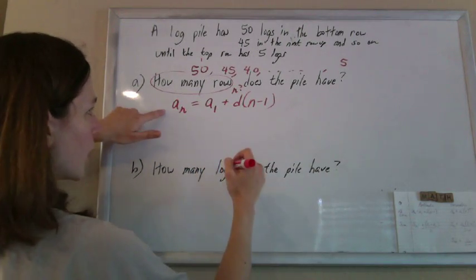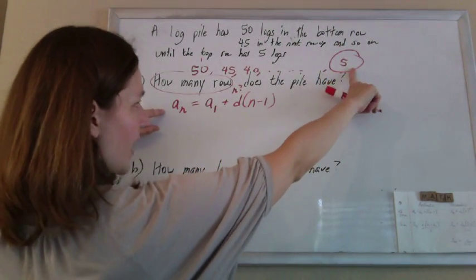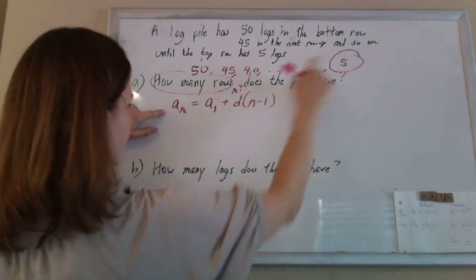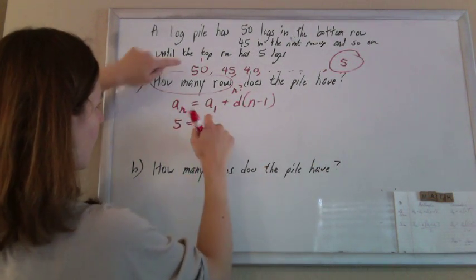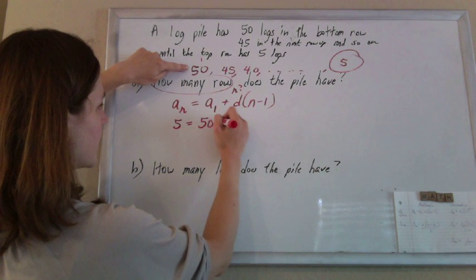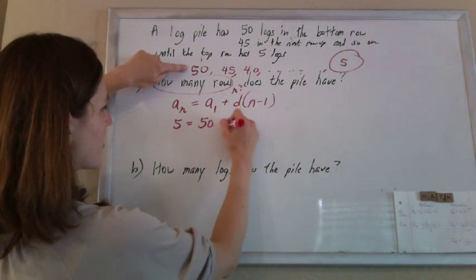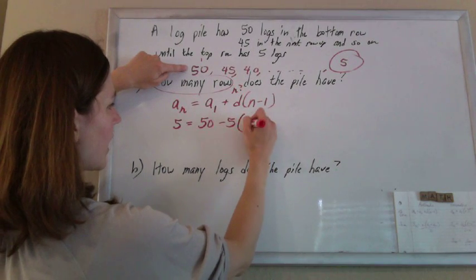So I know that my last term that I'm looking for, the value of the nth term is 5, and the first term is 50. The common difference is 5, or negative 5, but I just don't know that n.